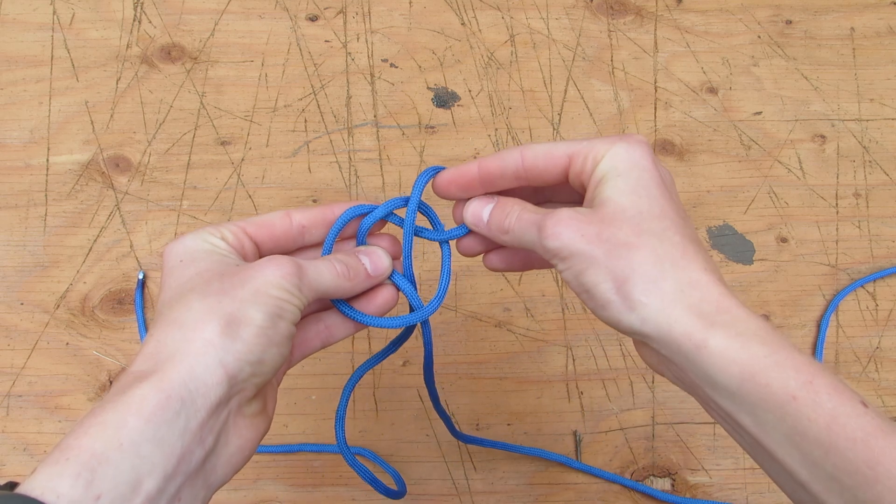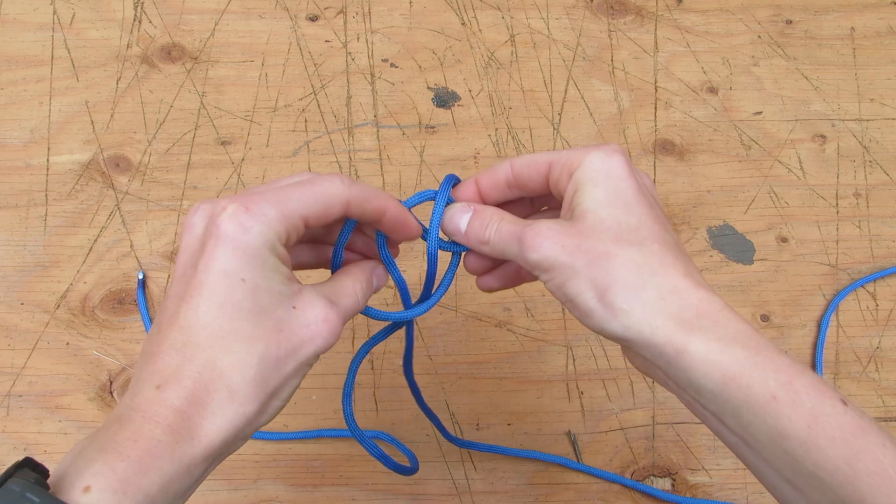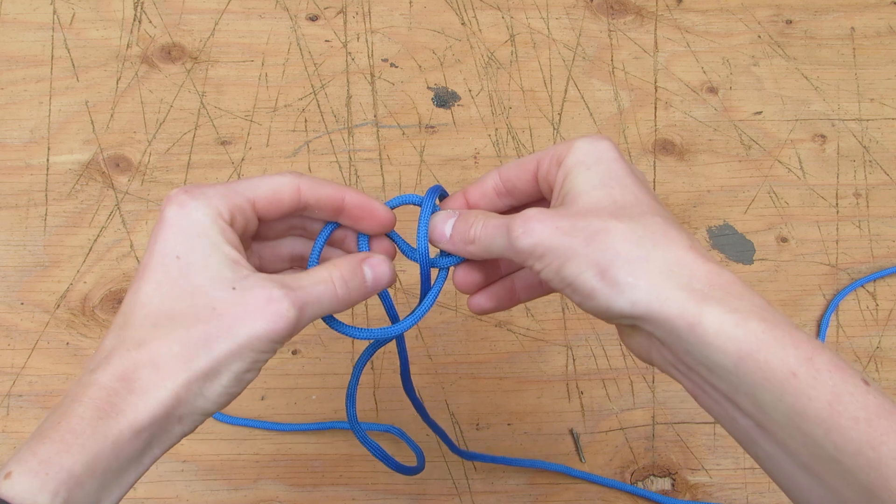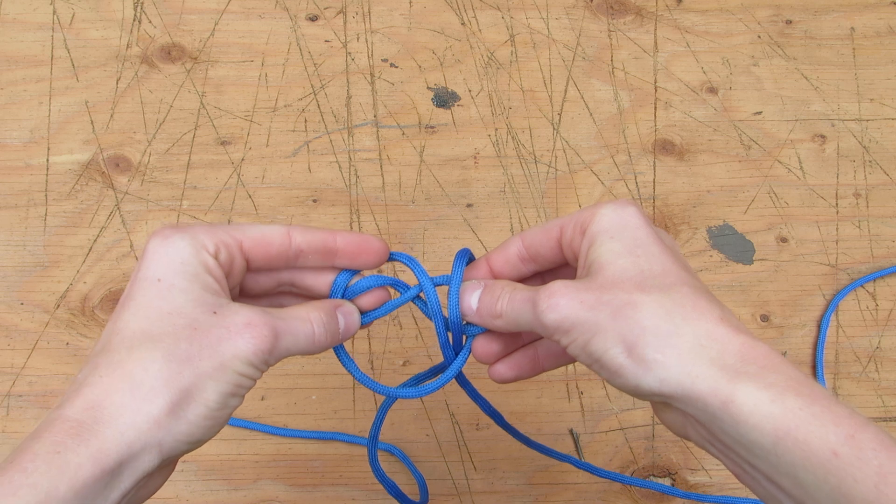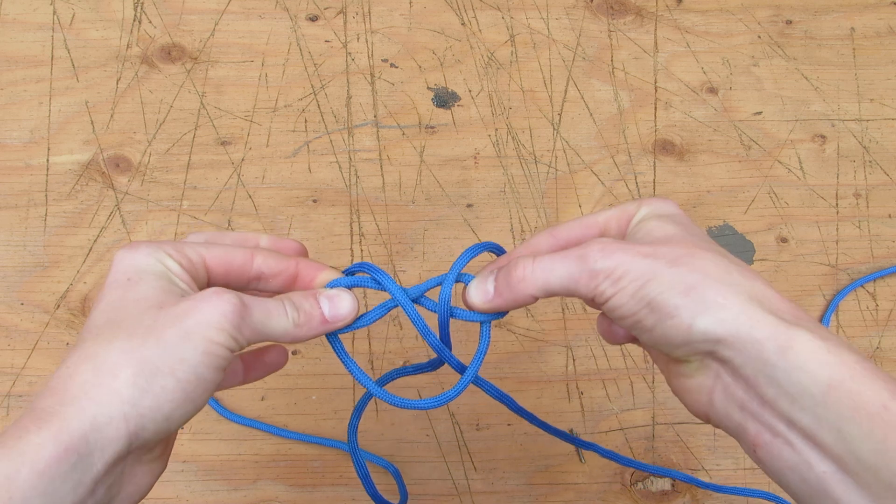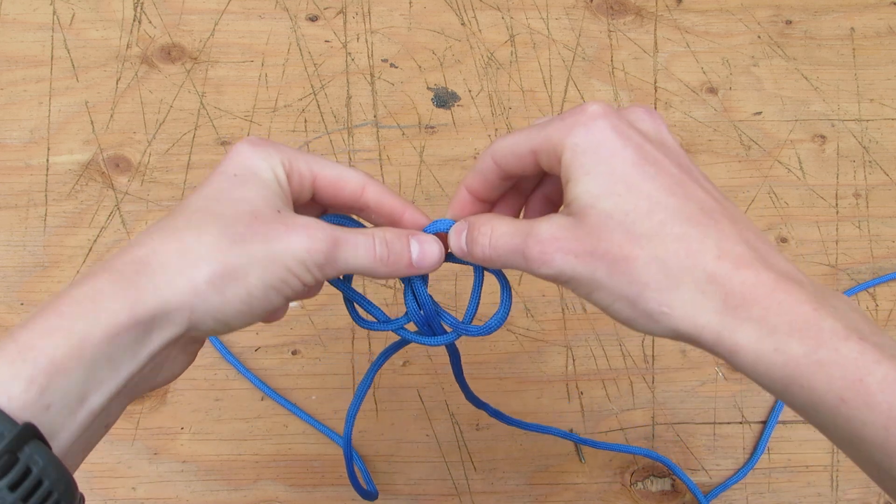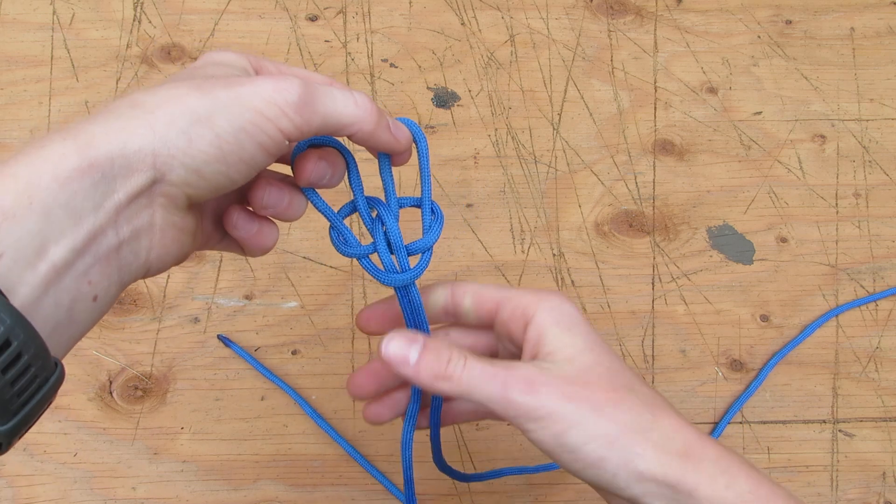make a loop and pinch this one. I'm going to do the same with this one right here. Like that and put it over this one and grab this like that. Then I can just pull. I'm going to pinch those two loops and then pull this in.